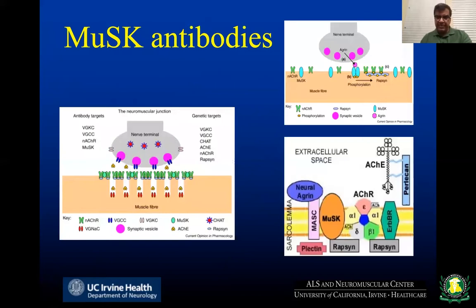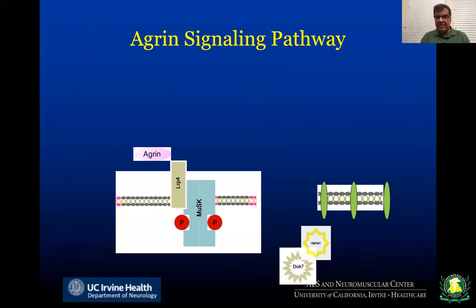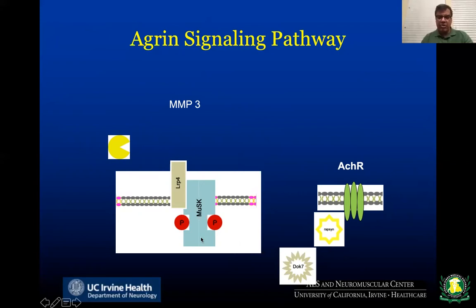MuSK is another neuromuscular junction protein present right next to the acetylcholine receptor. It normally must be phosphorylated to function. Agrin, released by the presynaptic membrane, causes activation of LRP4, which then phosphorylates MuSK. Phosphorylation of MuSK results in movement of DOC7, which ultimately clusters the acetylcholine receptor. Without this cascade, you cannot get neuromuscular junction transmission. MuSK therefore plays a very important role in neuromuscular junction transmission.